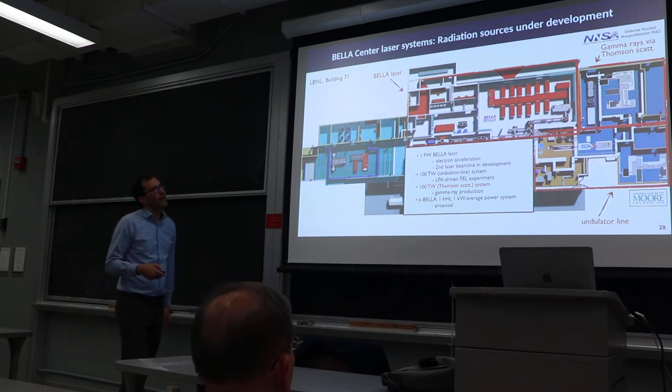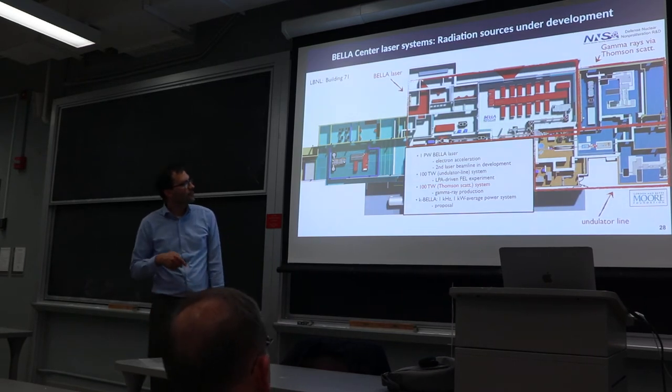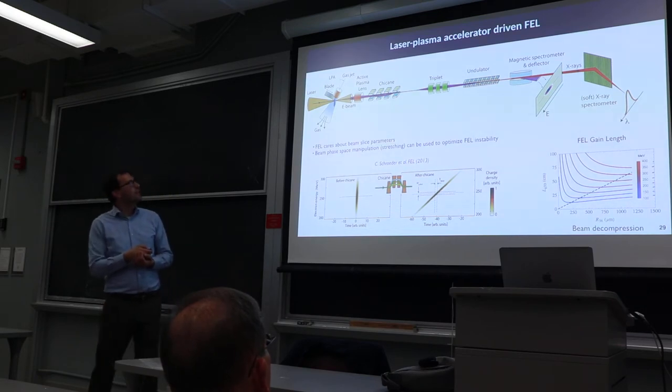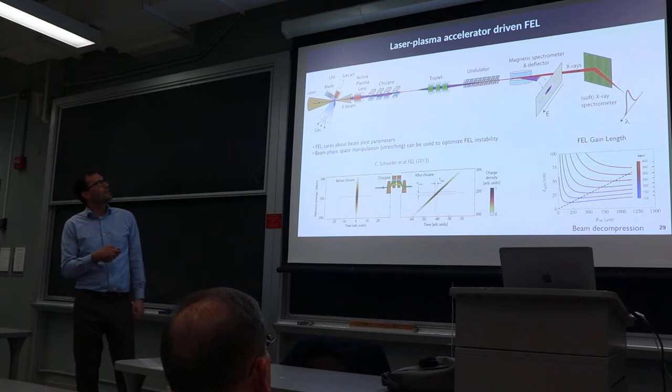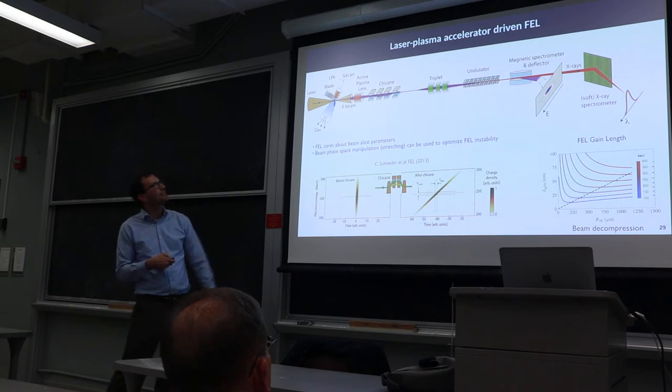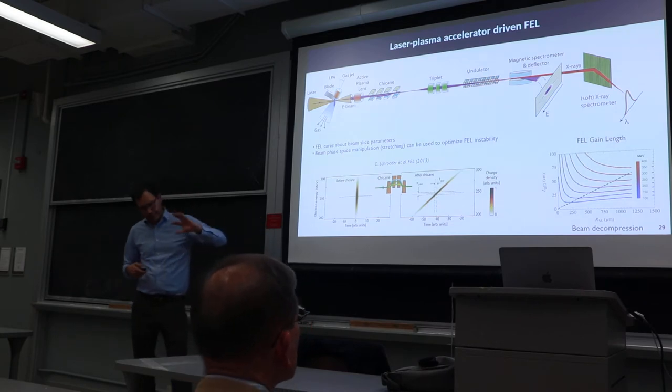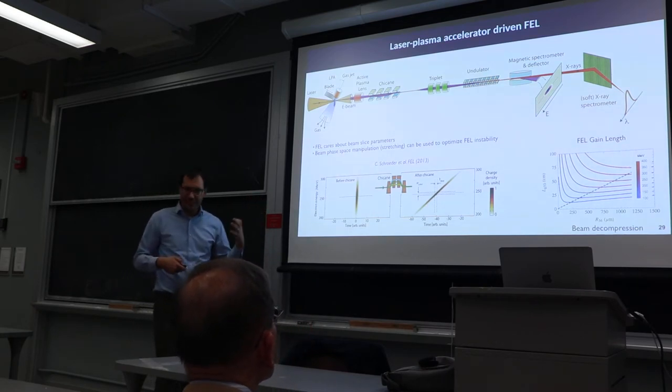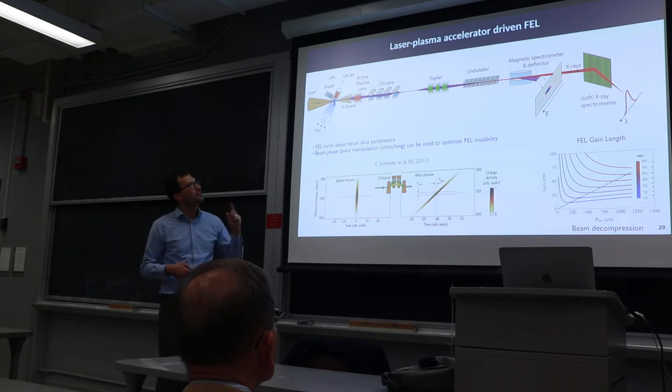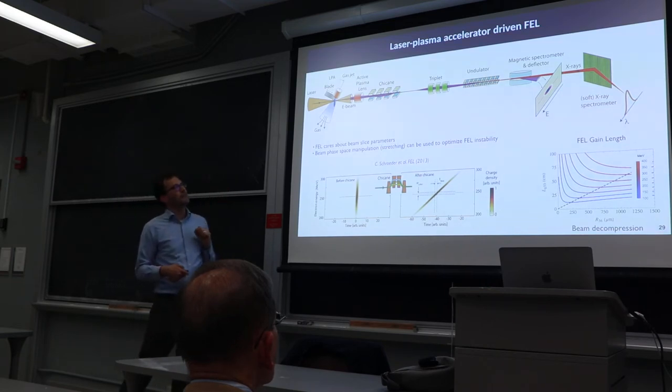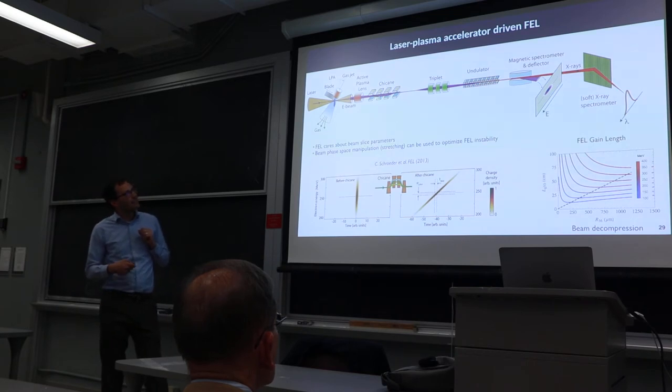The laser plasma accelerator driven FEL line uses gas jets, triggered injection, and an active plasma lens to focus the beam. The trick to really make this FEL instability lase is you need to redistribute your phase space of your electron beam. Our electron beams are extremely short and have a relatively large momentum spread. The idea is to use the chicane to really stretch your beam.